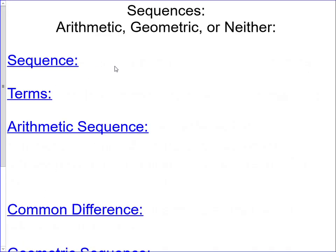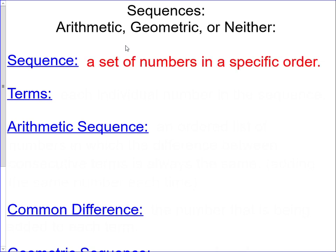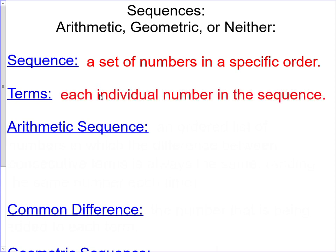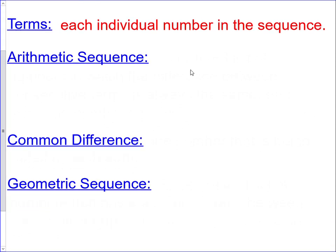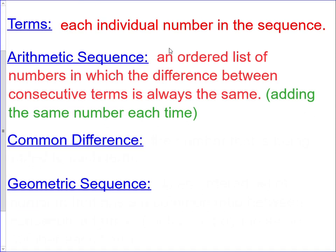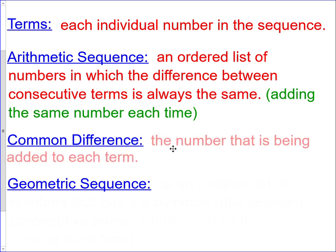Let's start with some definitions. A sequence is a set of numbers in a specific order. When we talk about terms, we're talking about each individual number in the sequence. An arithmetic sequence is an ordered list of numbers in which the difference between consecutive terms is always the same — in other words, they're adding the same number each time to find the next term. The common difference is the number that is being added to each term.